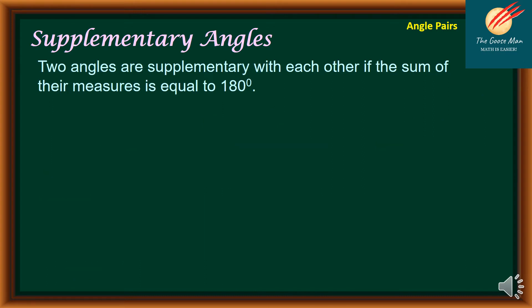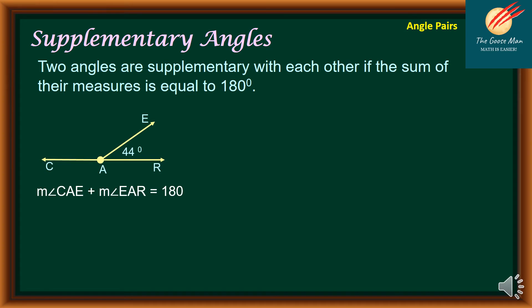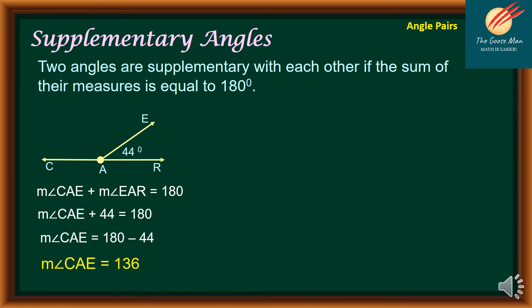Let's move on to supplementary angles. Two angles are supplementary with each other if the sum of their measurements is equal to 180 degrees. From the illustration, the measure of angle CAE plus the measure of angle EAR equals 180, provided these two angles are supplementary. Solving for the measure of angle CAE: CAE plus 44 equals 180. Subtracting both sides by 44, the measure of angle CAE equals 136 degrees.